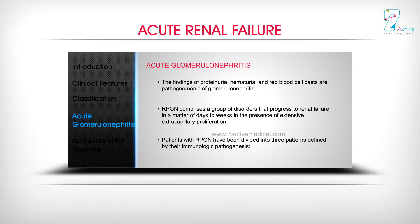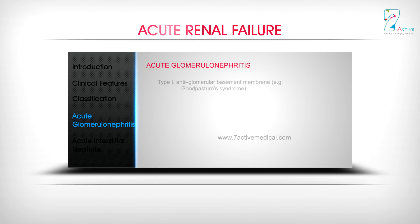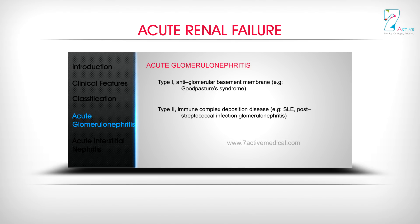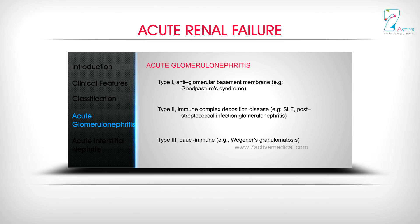Patients with RPGN have been divided into three patterns defined by their immunologic pathogenesis: Type 1 — Anti-glomerular basement membrane (e.g., Goodpasture's syndrome); Type 2 — Immune complex deposition disease (e.g., SLE, post-streptococcal infection glomerulonephritis); Type 3 — Pauci-immune (e.g., Wegener's granulomatosis).